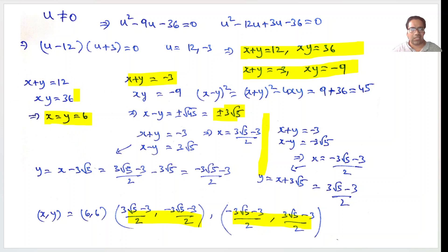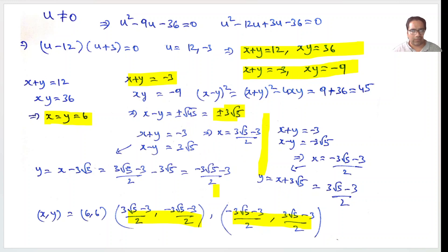To summarize: when x plus y equals 12 and xy equals 36 we get one solution — x equals y equals 6. When x plus y equals minus 3 and xy equals minus 9, x minus y can be plus or minus root 45, giving two solutions. So in total, we have three solutions for this problem.